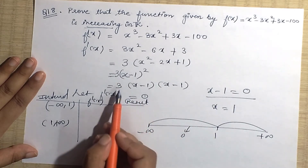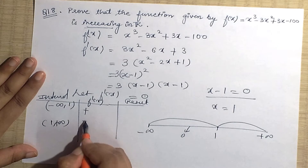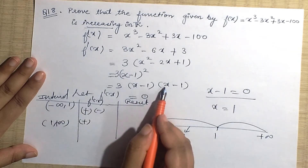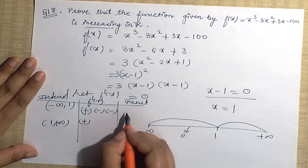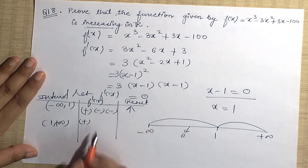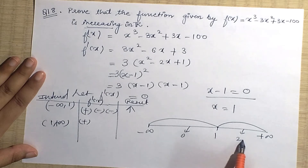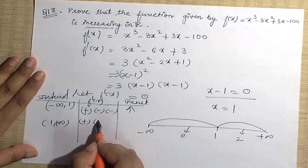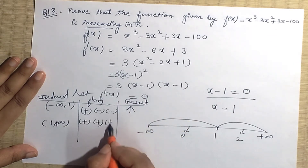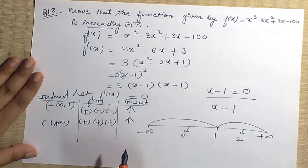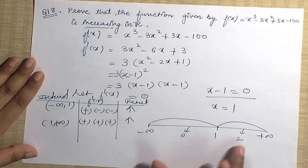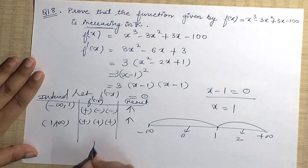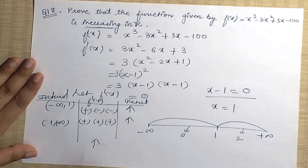In the interval (-∞, 1), take x = 0: f'(0) = 3(0-1)² = 3(1) = 3, which is positive. In the interval (1, +∞), take x = 2: f'(2) = 3(2-1)² = 3(1) = 3, also positive. So f'(x) ≥ 0 in both intervals. The function is increasing across all of ℝ — which is what we needed to show.